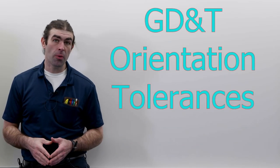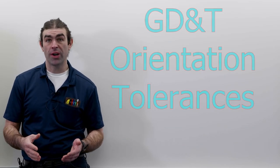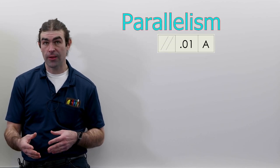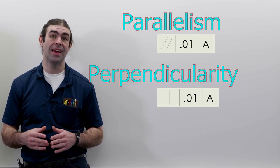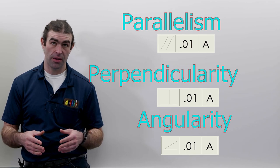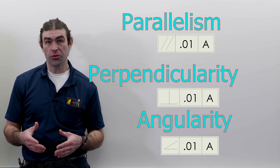In this video I'm going to cover orientation tolerances. There are three orientation tolerances: parallelism, perpendicularity, and angularity. They all control angular relationships.